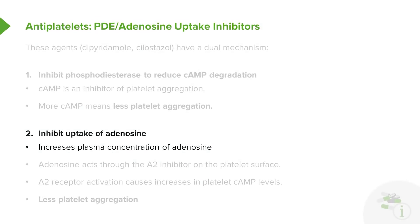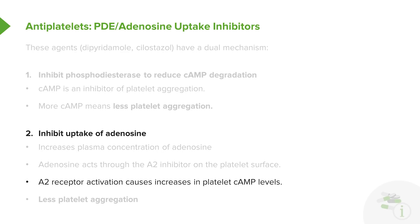The second effect of dipyridamole is that it inhibits the uptake of adenosine, increasing plasma concentration of adenosine. Adenosine acts through the A2 receptor on the platelet surface, and A2 receptor activation causes increases in plasma cyclic AMP levels. Once again, more cyclic AMP means less platelet aggregation — so we have less platelet aggregation through adenosine-mediated action.